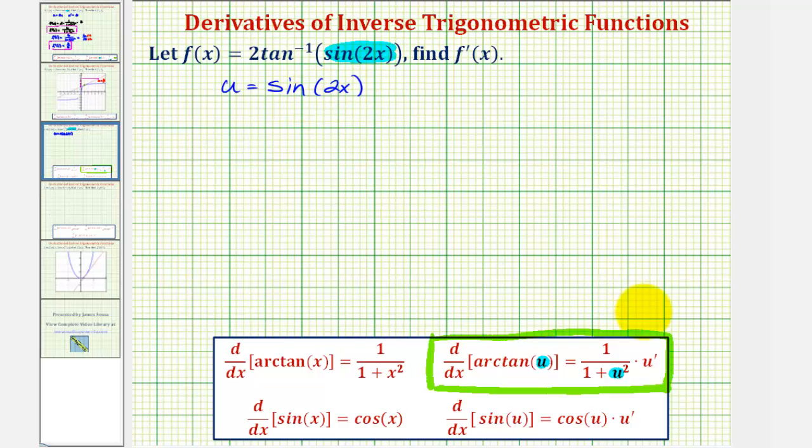And now that we've identified u, we need to find u prime or du dx. So if u is equal to sine two x, u prime or du dx will also require the chain rule, where the derivative of sine two x would be equal to cosine two x times the derivative of two x, which is two. So u prime is equal to cosine two x times two. Let's write this as two cosine two x.